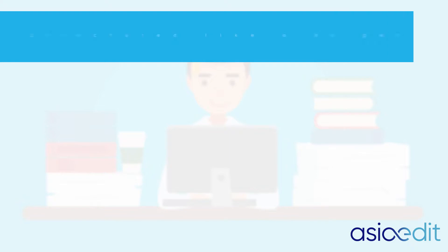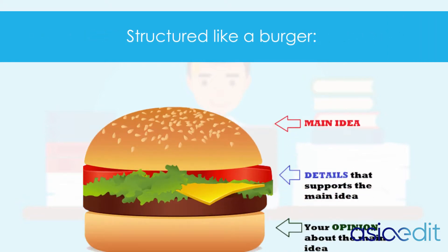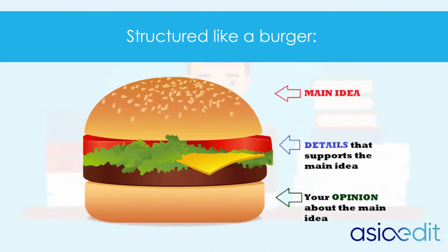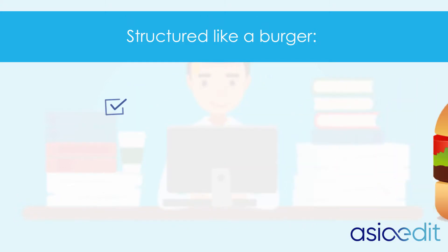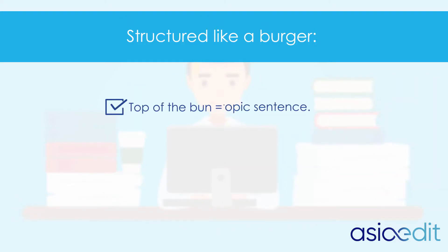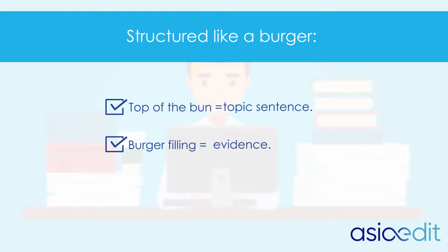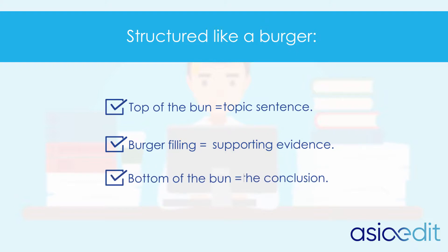It might help you to think of your paragraph as being structured like a burger. The top of your bun is your topic sentence. The filling is your supporting evidence — you can add different ingredients to make your argument more substantial. The bottom of the bun provides a conclusion that holds the filling together.